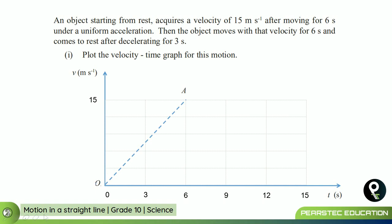Under uniform acceleration — that is the line OA — the object then moves with the same velocity of 15 meters per second for another six seconds, which is also plotted. Then it comes to rest after decelerating for three seconds, from 12 to 15 seconds. So OA is uniform acceleration, AB is constant velocity, and BC is deceleration back to rest.